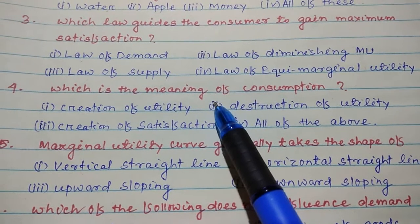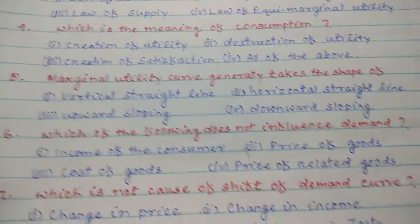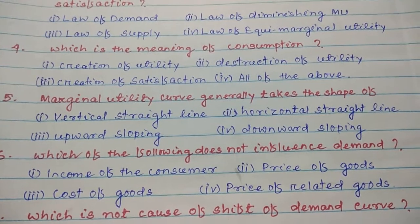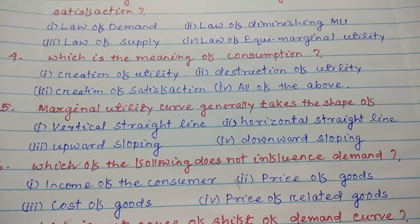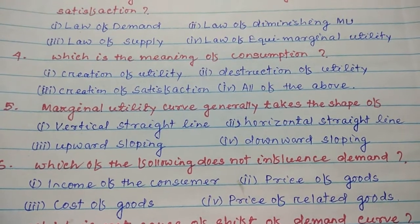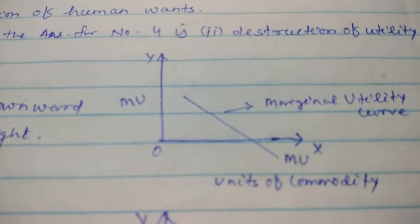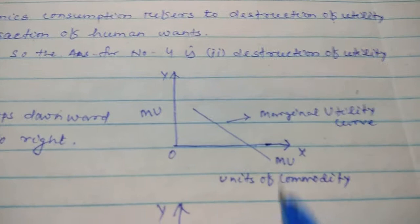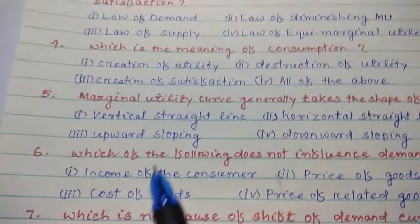Number five: The marginal utility curve generally takes the shape of I. Vertical straight line, II. Horizontal straight line, III. Upward sloping, IV. Downward sloping. We see in the diagram that the MU curve is the marginal utility curve — it slopes downward to the right. So the answer for number five is IV. Downward sloping.